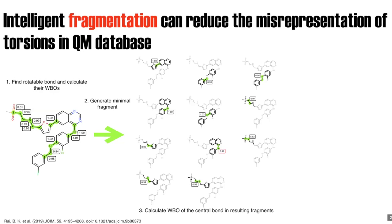If the difference in Wiberg Bond Order between the fragment and the parent molecule is above the threshold, we must start building out around the fragment. In this example, the WBO for the highlighted bond in the fragment is 0.99, while in the parent molecule it is 1.09. A 0.1 difference in Wiberg Bond Order does lead to a significant change in the torsion scan, so we need to grow the fragment.